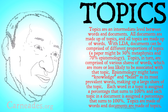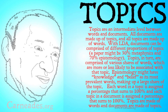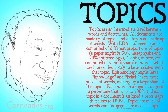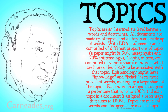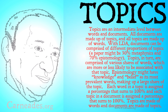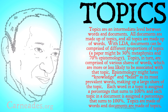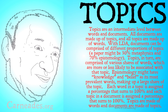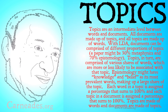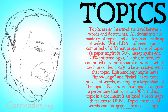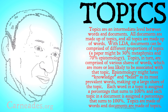Topics, in turn, are comprised of various shares of words which are more or less likely to be associated with that topic. Our epistemology topic, for example, might have 'knowledge' and 'belief' as its most prevalent words, making up a large share of the topic, whereas words like 'property' or 'substance' might be much less common in that topic but much more common in metaphysics — which is why we could interpret that one topic is epistemology and another is metaphysics. Each word in a topic is assigned a percentage that sums to 100%, and each topic in a document is assigned a percentage that sums to 100%.